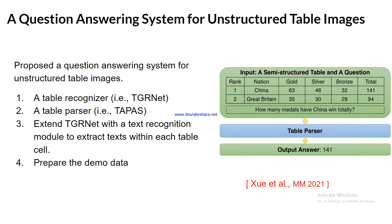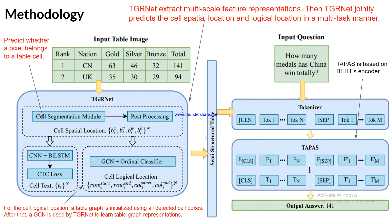This paper proposes a question answering system for unstructured table images using TGRNAT and a table parser called TAPAS. TGRNAT is used for table recognition, and TAPAS is used for table parsing. The paper also extends the TGRNAT model with a text recognition module to extract text within each table cell. Since there was no suitable dataset available, they prepared a demo dataset for this experiment.